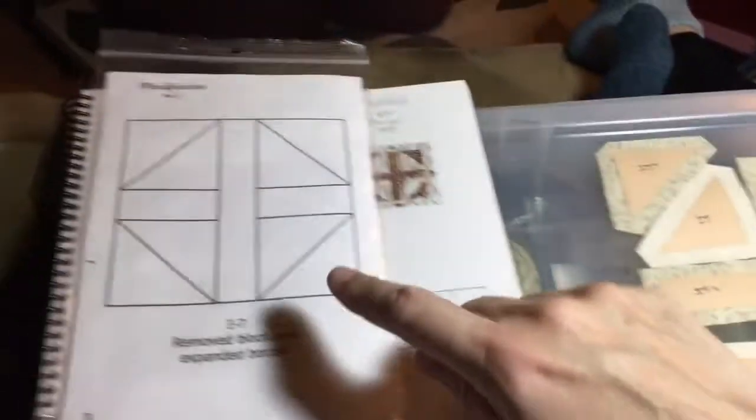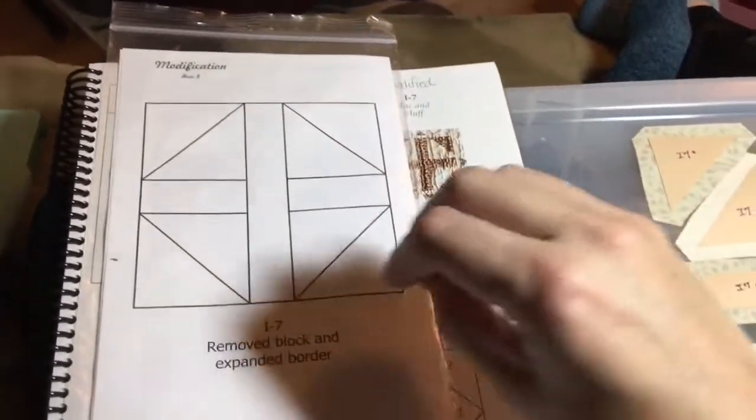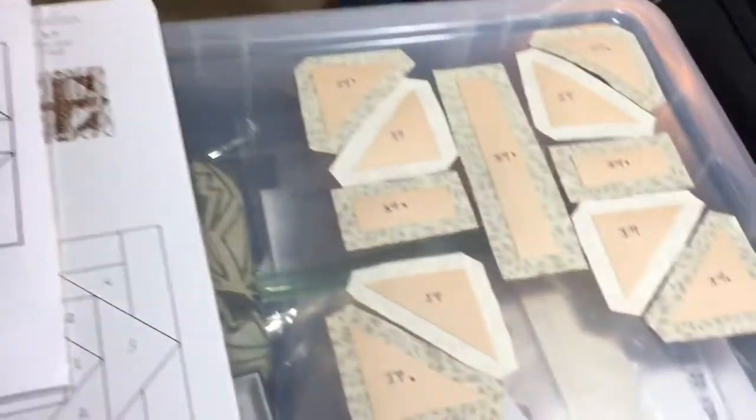So real quick and easy assembly, just put these blocks together, connect them to this, and then put the rows together. I'm going to get started with my basting.